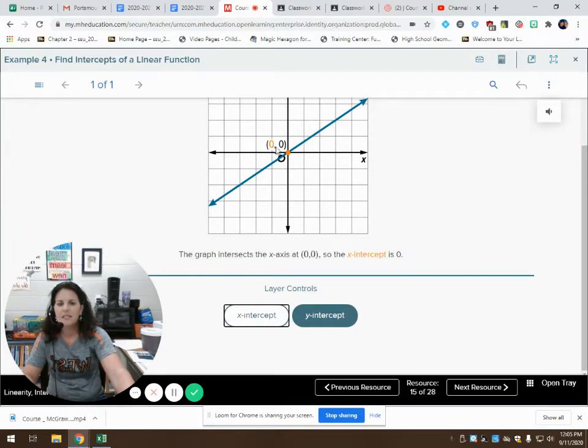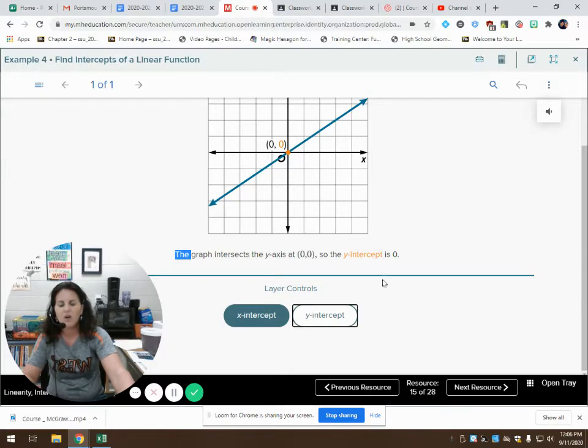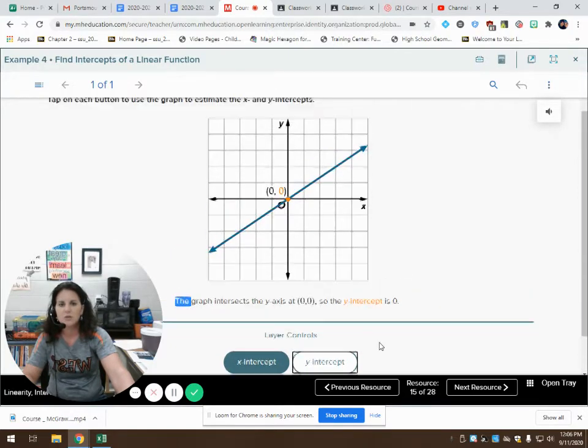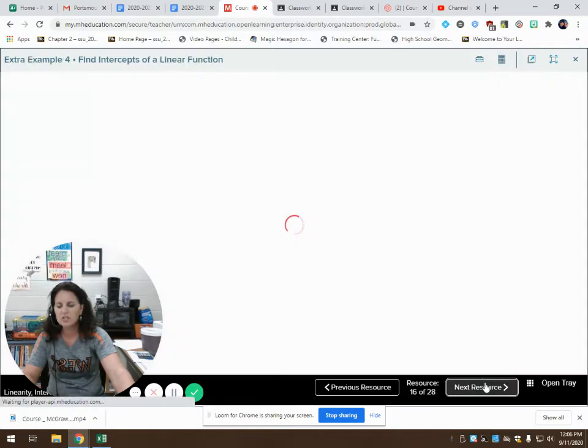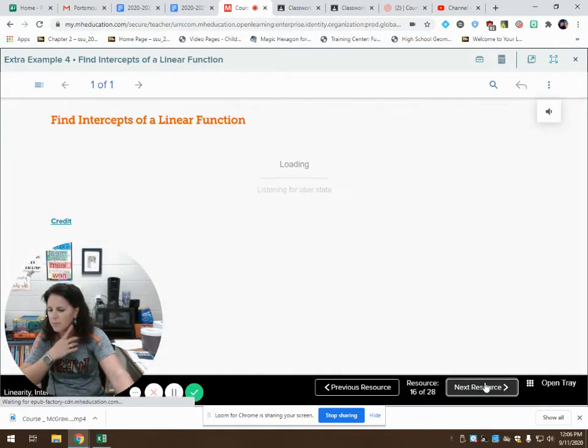When x is zero, y is zero. When y is zero, x is zero. So both my x and my y intercept are at the origin at zero, zero. Let's try another one. Let's just look at this extra example since that one was so simple.